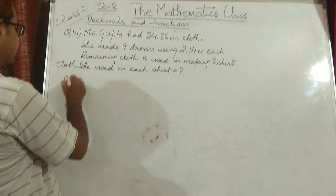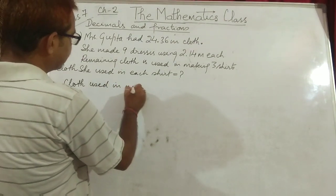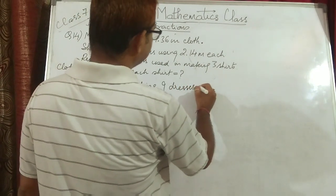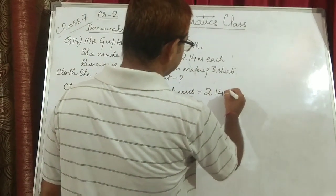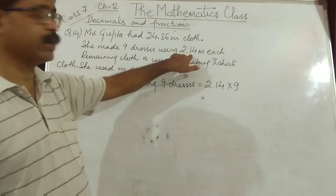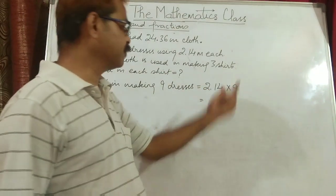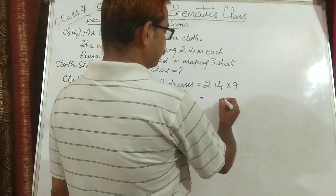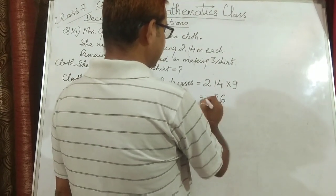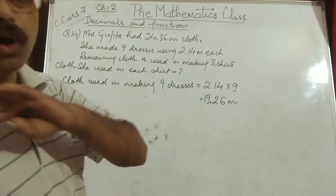Cloth used in making 9 dresses = 2.14 into 9. Because in each dress she uses 2.14 meters and she is making 9 dresses. Calculating: 9 times 4 is 36, carry 3; 9 times 1 is 9 plus 3 is 12, carry 1; 9 times 2 is 18 plus 1 is 19. So 19.26 meters of cloth has been utilized.